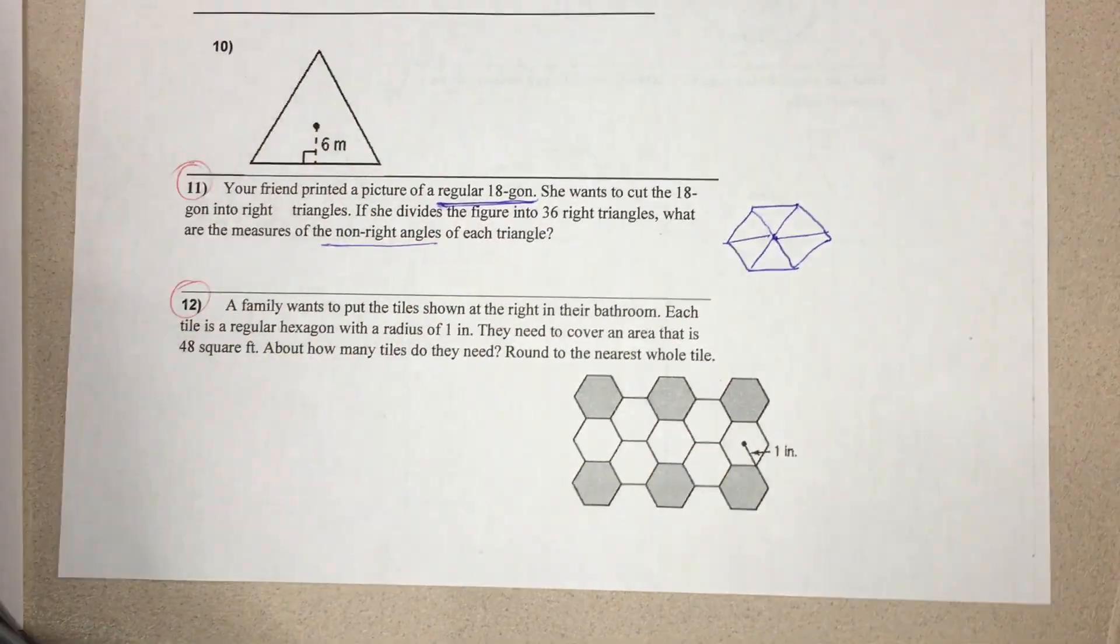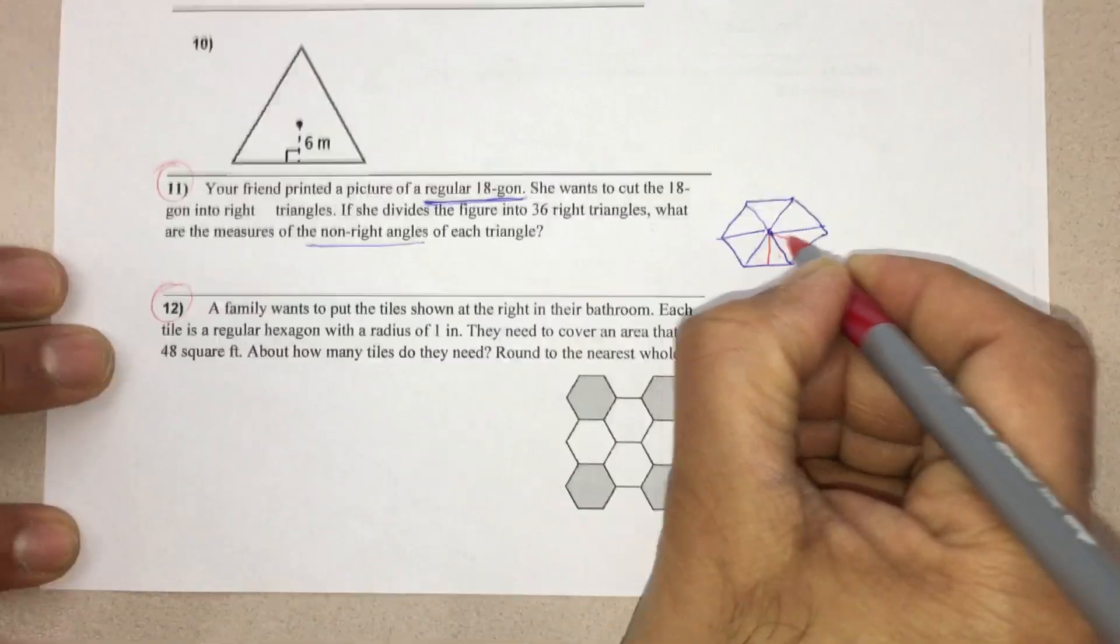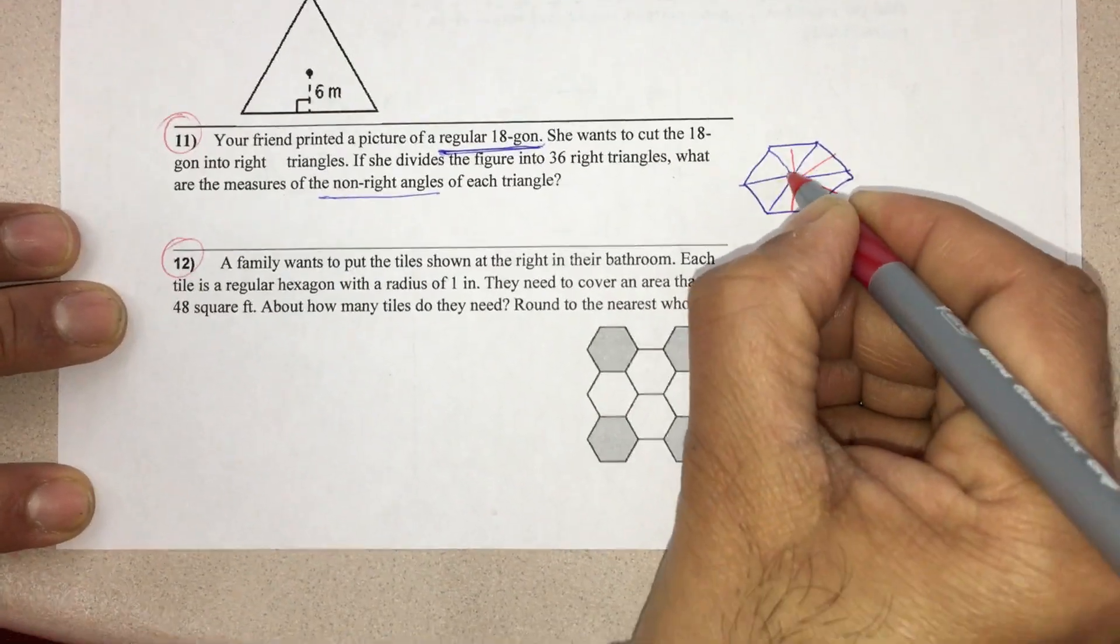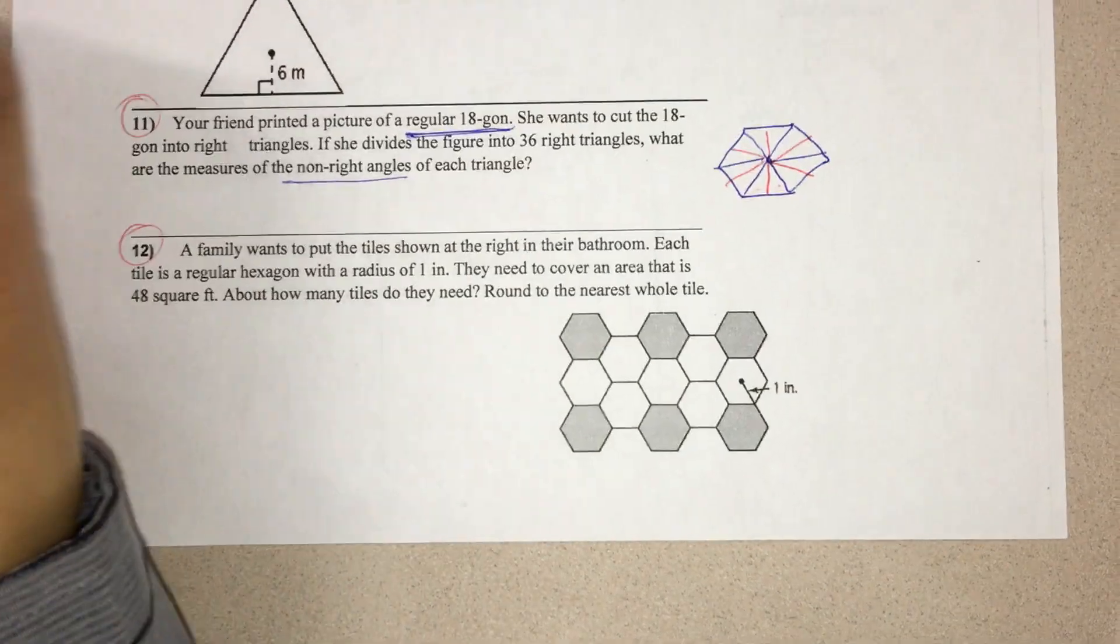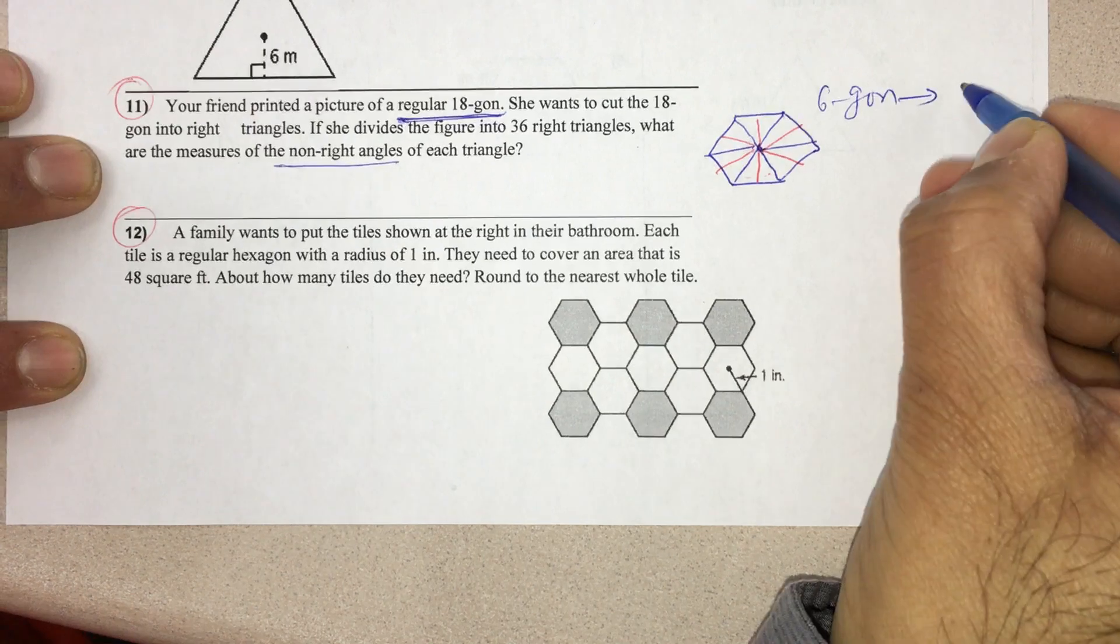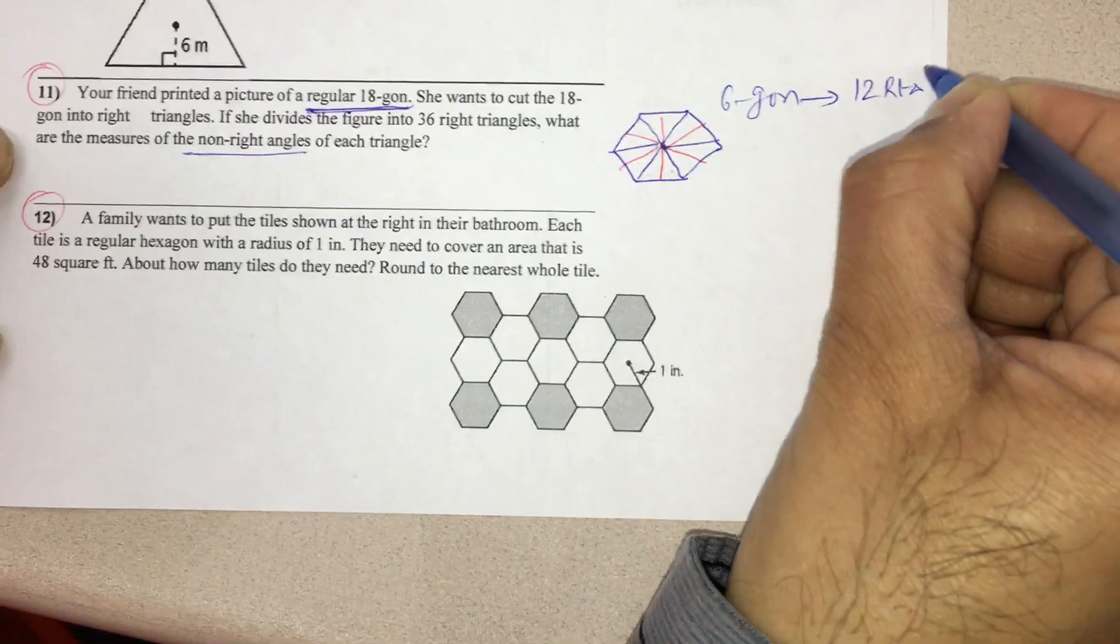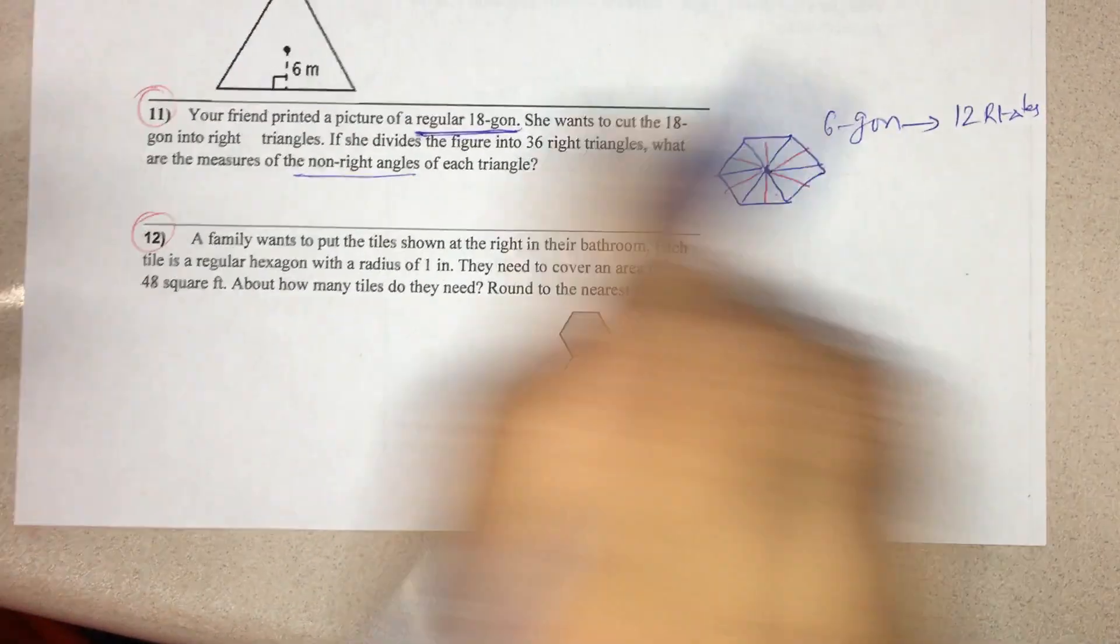If I join from the center, this apothem like this, I got 2 right triangles like this. So for a 6-gon, I got totally double to that: 12 right triangles.